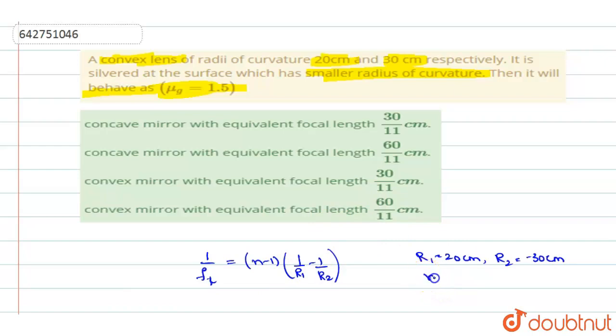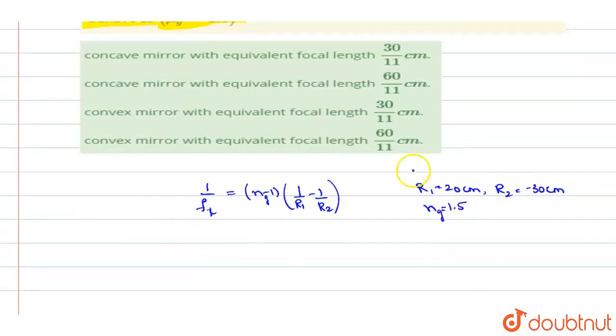Now N is given to be NG, so NG is given to be 1.5. Now substituting all the values over here, you get 1 by FL is equal to 1.5 minus 1 into 1 by 20 minus of minus becomes plus 1 by 30. So when you simplify this out, FL will be equal to 120 over 5, which is equal to 24 cm.